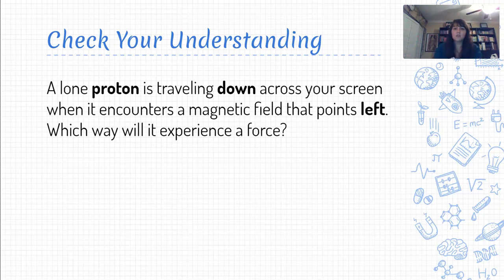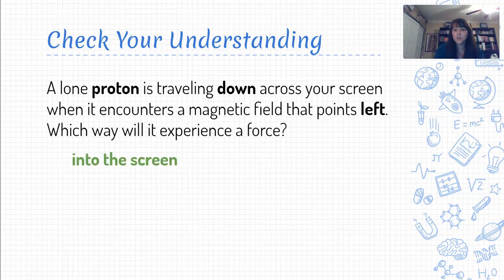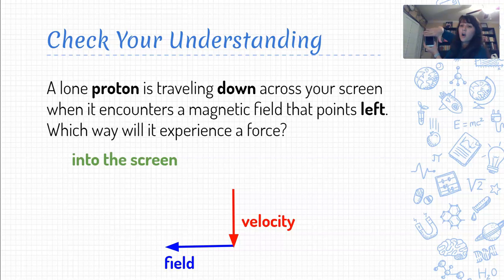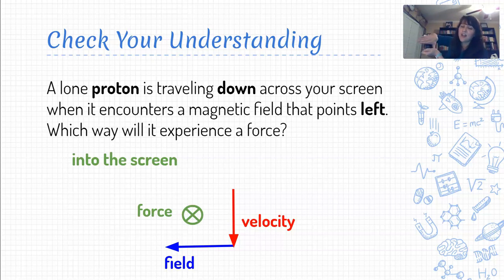Last one — we still have a proton traveling down across your screen, but now it's entering a magnetic field pointing to the left. Which way will it get pushed? The answer is into the screen. The proton's velocity is directed down, so my thumb goes down. The field is directed to the left, so my fingers point to the left while my thumb is still pointing down. What I notice is that my palm is facing in towards the screen — away from me — which means that has to be the direction of the force acting upon this proton.